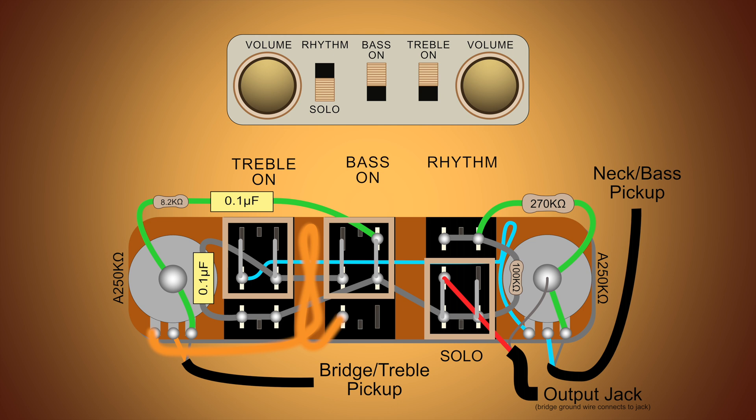Now let's turn off the neck pickup by flipping its switch, leaving the bridge pickup on, and watch what happens. With the neck switch off, there is no longer a dead end for the treble circuit, but instead a road to a long crazy circuitous trip to the amplifier thanks to connecting to a pole from the middle switch.